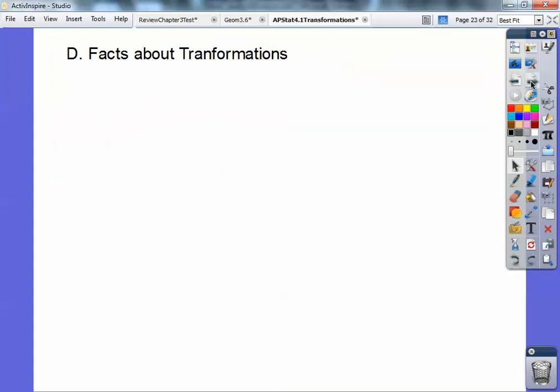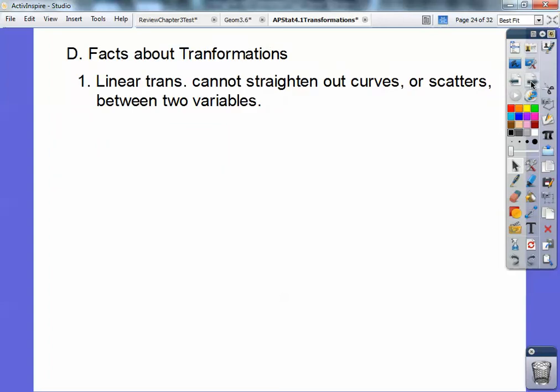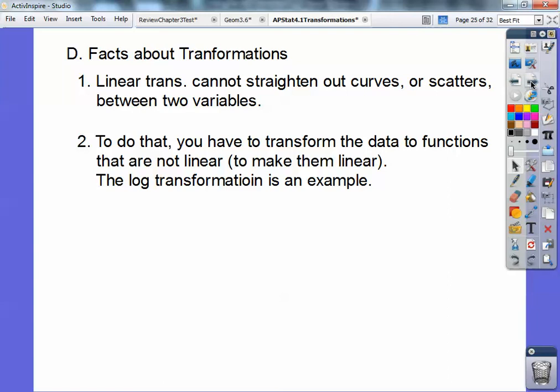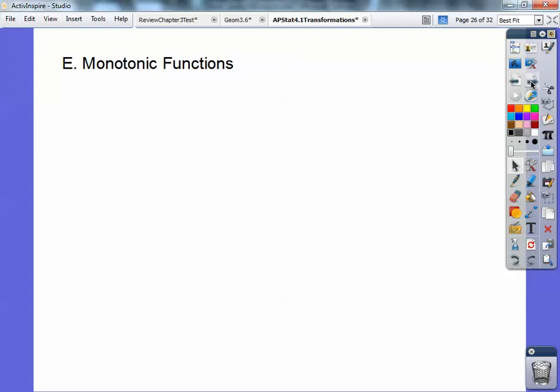Facts about transformations you guys. Linear transformations cannot straighten out curves or scatter plots between two variables. To do that, what you do is transform the data and take things like logarithms. A log transformation is going to be our key trick on this. We're going to log things. And then just some definitions you guys, monotonic functions.